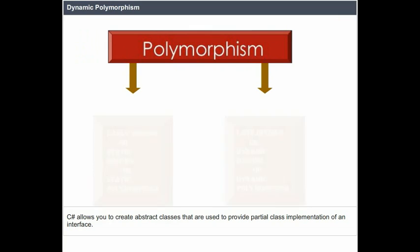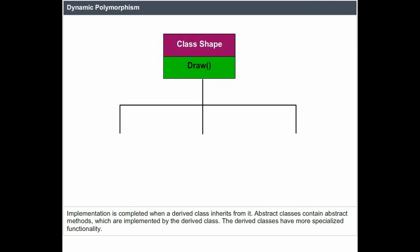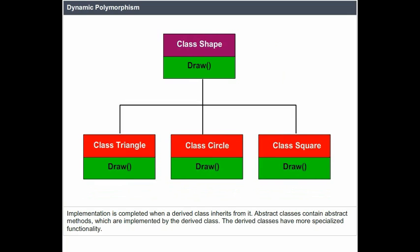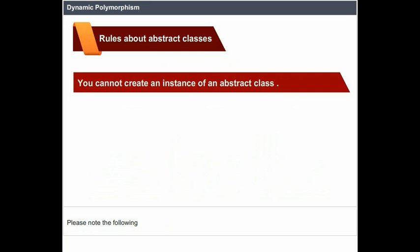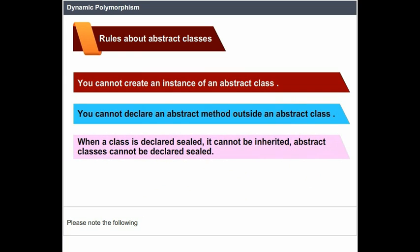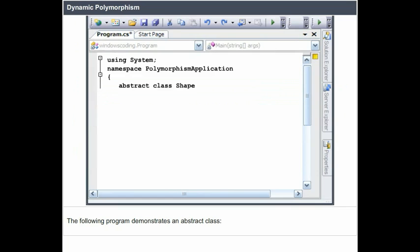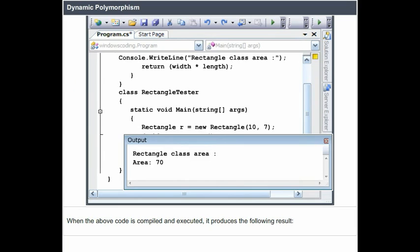Dynamic polymorphism: C# allows you to create abstract classes that are used to provide partial class implementation of an interface. Implementation is completed when a derived class inherits from it. Abstract classes contain abstract methods which are implemented by the derived class, giving derived classes more specialized functionality. Rules about abstract classes: you cannot create an instance of an abstract class; you cannot declare an abstract method outside an abstract class; when a class is declared sealed, it cannot be inherited; and abstract classes cannot be declared sealed. The following program demonstrates an abstract class, and when compiled and executed, it produces the following result.